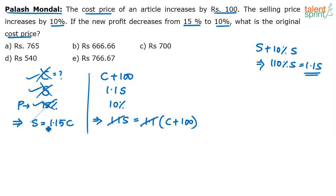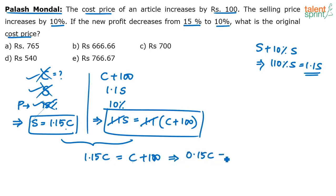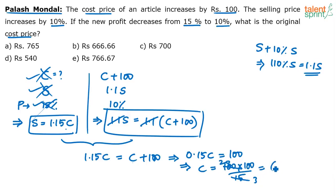We now have two equations: S equals 1.15C (first equation) and S equals C plus 100 (second equation). Since both equal S, we can write 1.15C equals C plus 100. That means 0.15C equals 100, so C equals 100 divided by 0.15, which is 100 times 100 by 15, giving 2000 by 3, approximately 666.66. Option B is the answer.